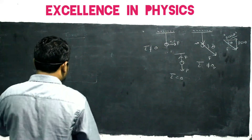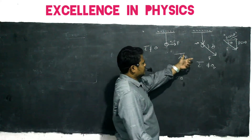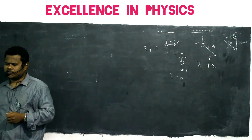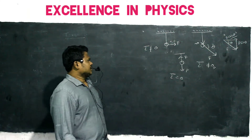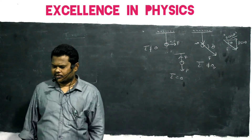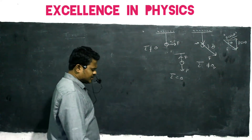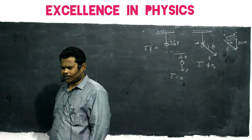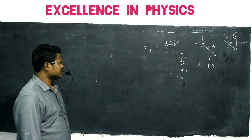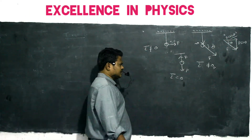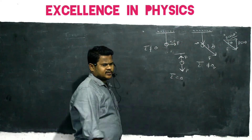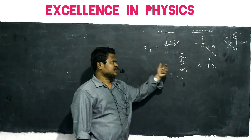For rotation to be produced, there must be a component perpendicular to the direction of the radius vector. If you are applying force along the radius vector direction, those forces are not responsible for rotation of this body.